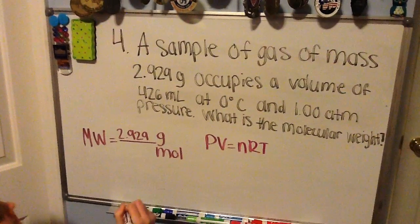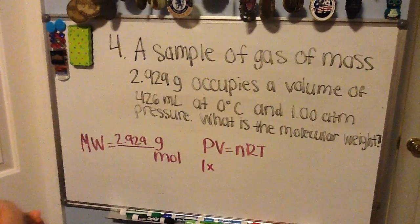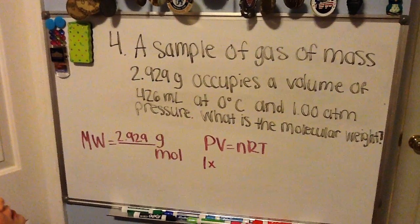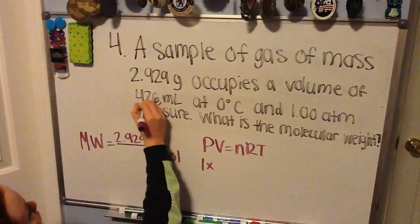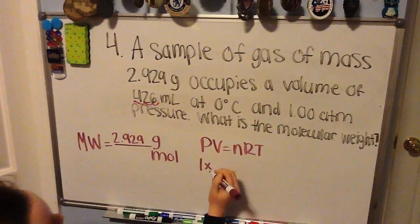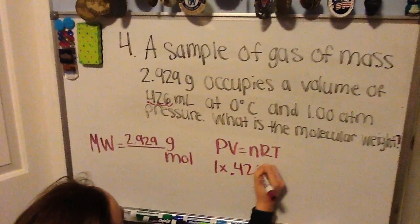Your pressure is at one atmosphere, and your volume is 426 milliliters. So you want to move your decimal point over three places to get it into liters, which would give you 0.426 liters.